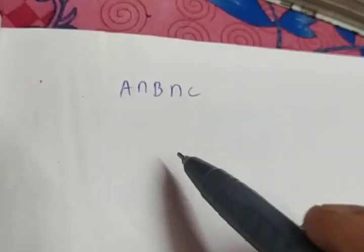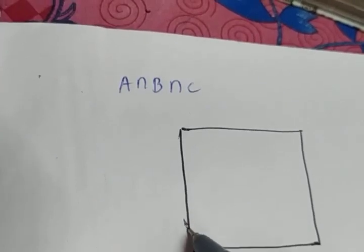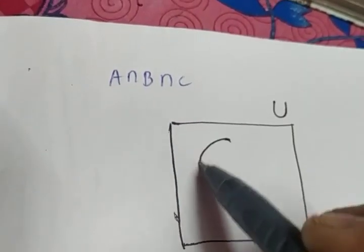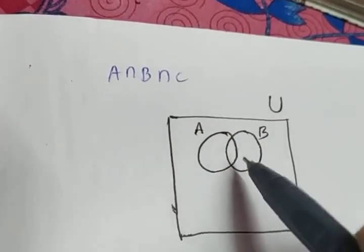The next one is A intersection B intersection C. So what you have to do is draw the rectangle which represents U. So this is A, second one is B, this is C.